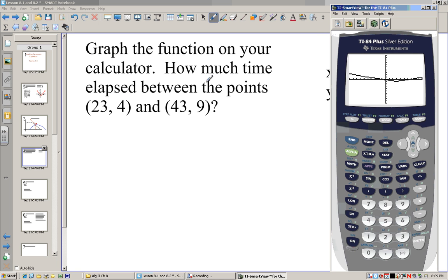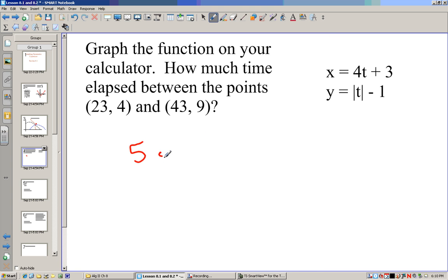Now there's another part of this question that says, how much time elapsed between 23.4 and 43.9? Let's look at the table between 23.4. This 43.9 is the closest one where I'm at. 43.9, the t is 10. So 10 minus, looks like when t is 5, it's 23.4. So 10 minus 5, there's 5 seconds between 23.4 and 43.9.